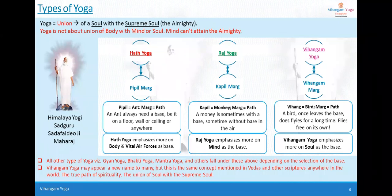One is an insect — the ant; one is an animal — the monkey; and one is a bird. There is a fine differentiation in terms of their way of moving. The ant, when it has to go from one place to another, always needs a base — whether it's the ceiling, the wall, the floor, or your clothing. It must always be attached to a base.